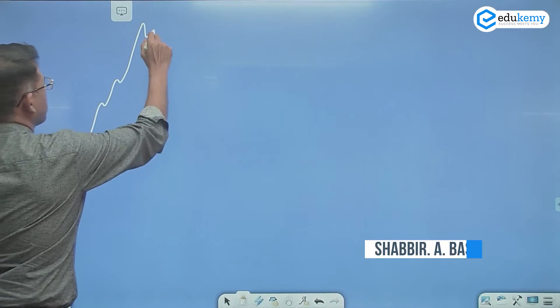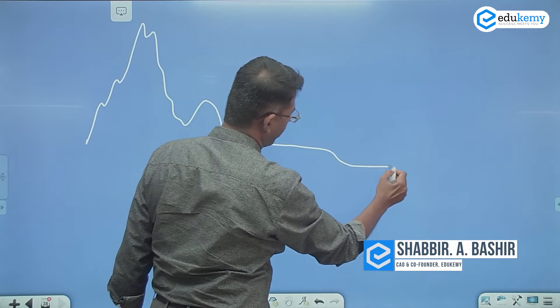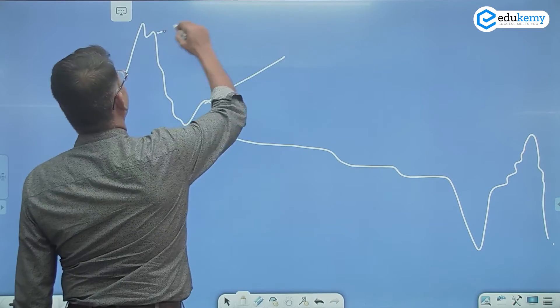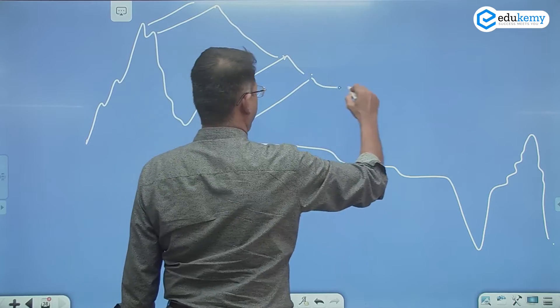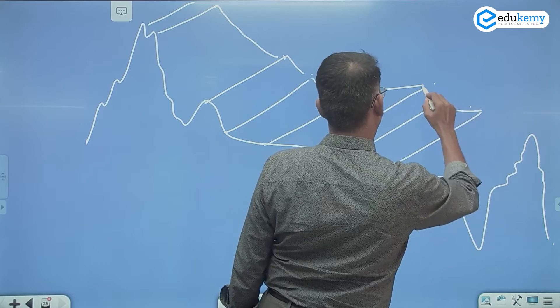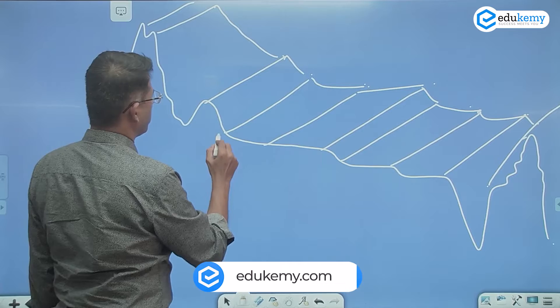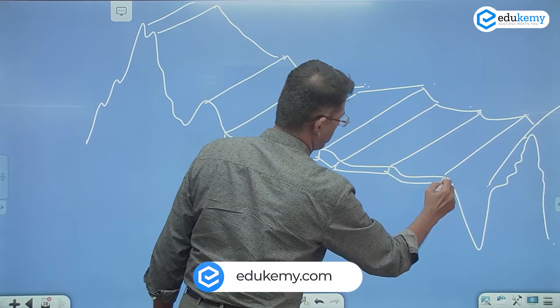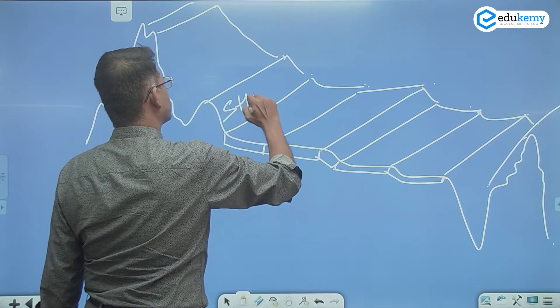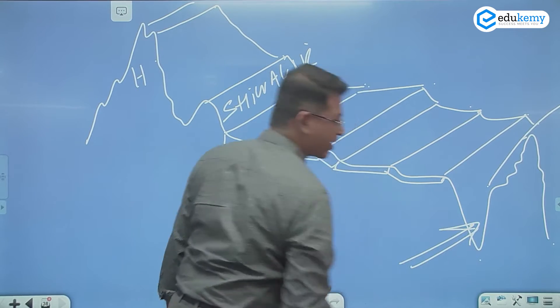This is Himalayas, Shivalik's. So this is Himalayas, this is Shivalik's, say this is the river Ganga.